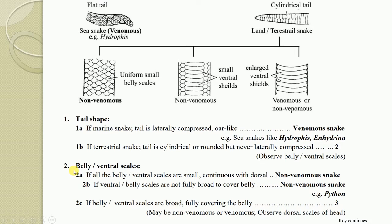Key 2A: If all the belly or ventral scales are small in size and continuous with the dorsal scales — uniform and small — this is an indication of a non-venomous snake. In non-venomous snakes you will find uniform small belly scales generally continuous with the dorsal scales. If you do not find such uniform scales, move to the next key.